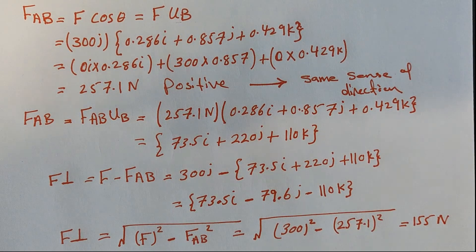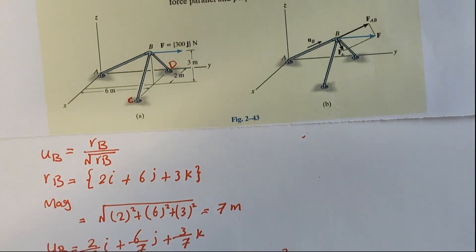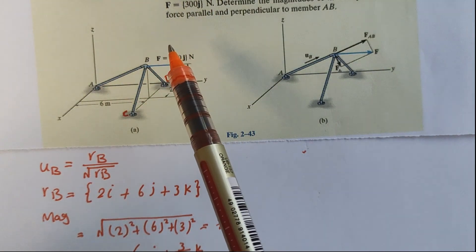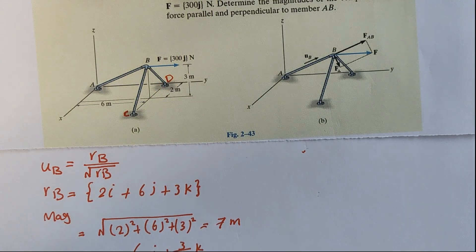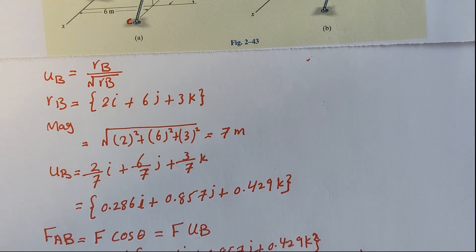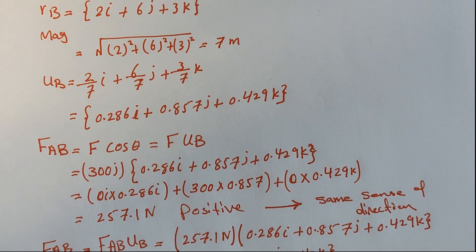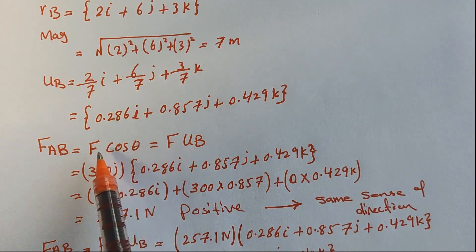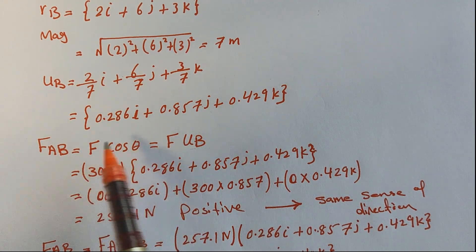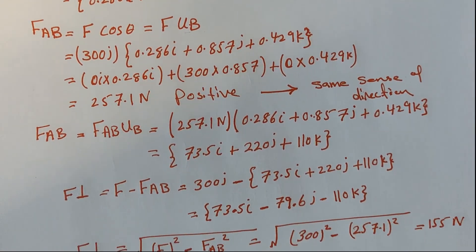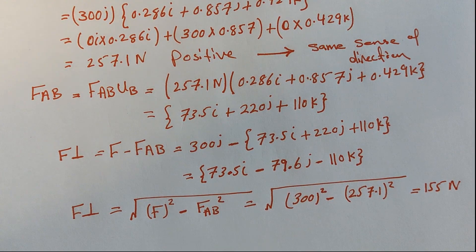To summarize: to find the parallel and perpendicular components of a force, the first step is to find the unit vector, and to find the unit vector you must find the position vector first to get the magnitude. Then find the unit vector, multiply it by the force applied to get the parallel component. If theta is given, use F·cosθ directly; otherwise use the unit vector method. Everything after that is straightforward.